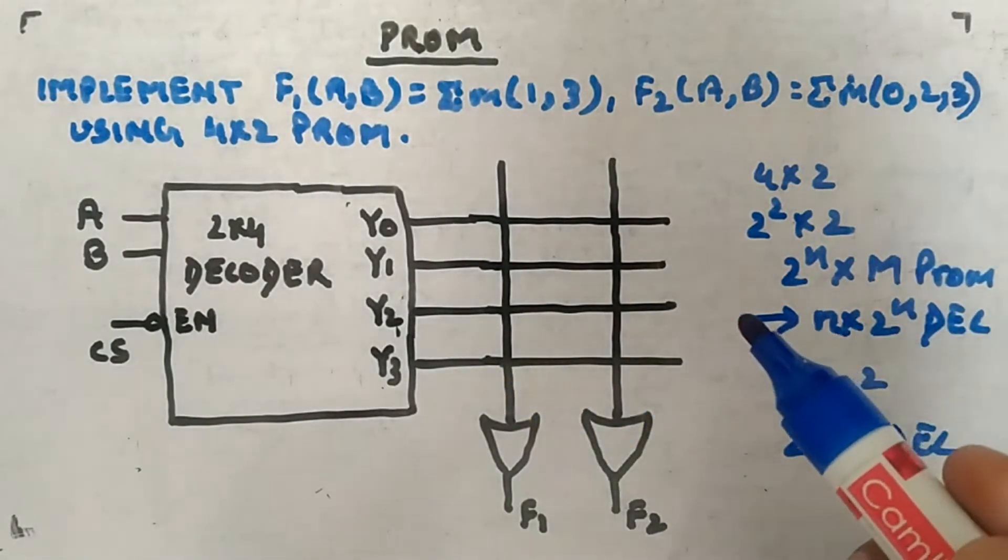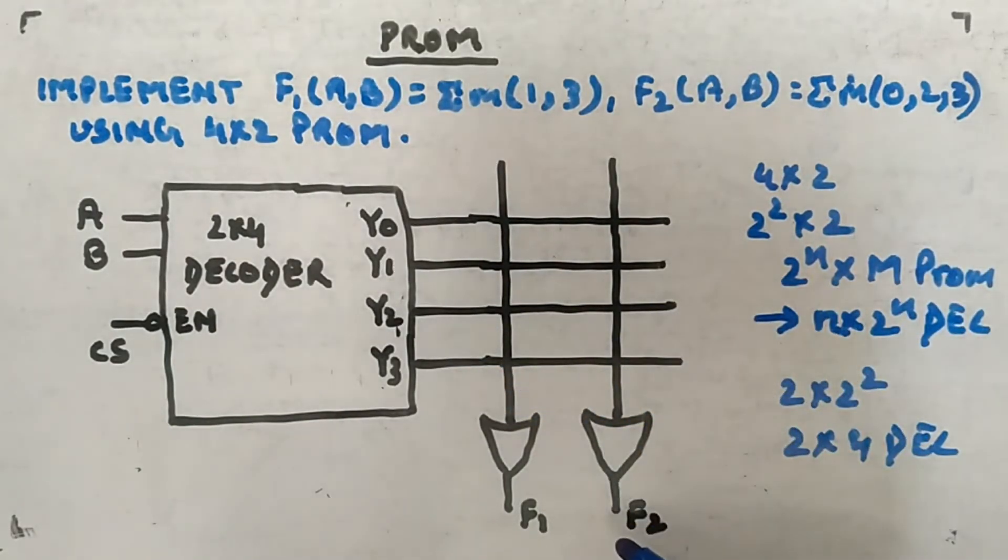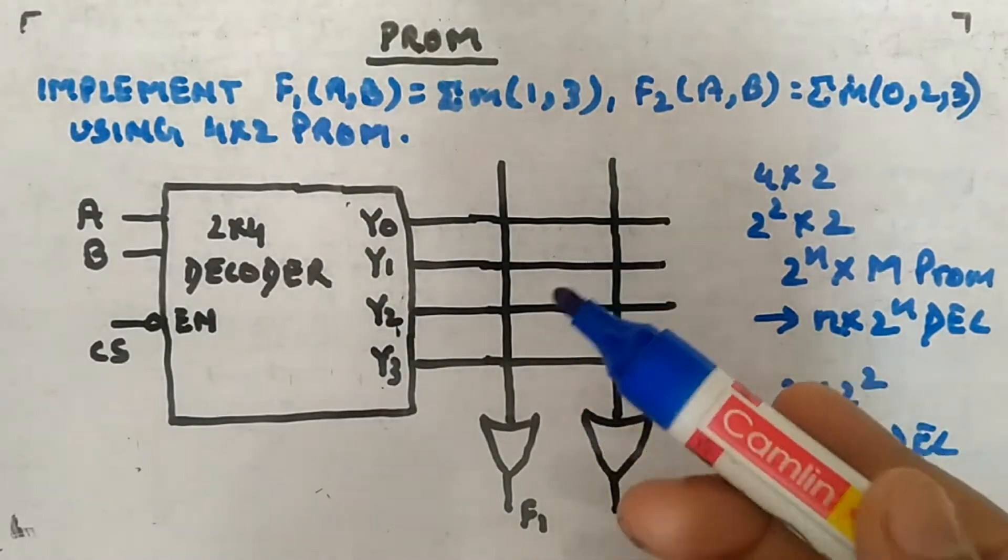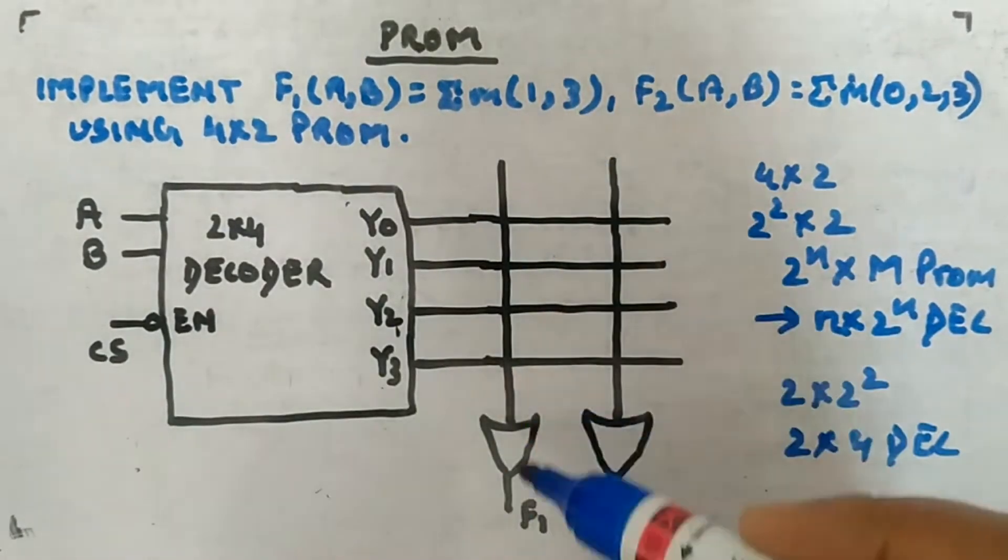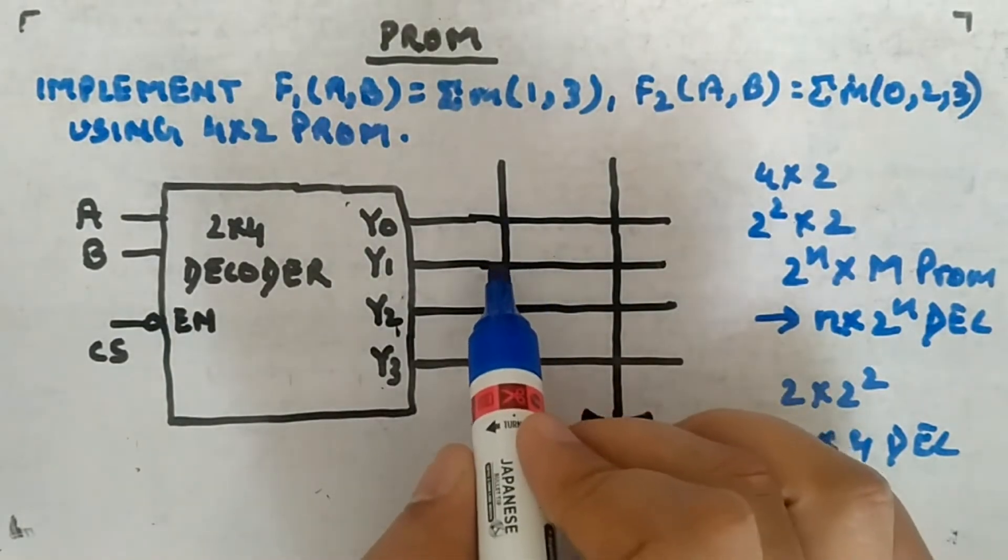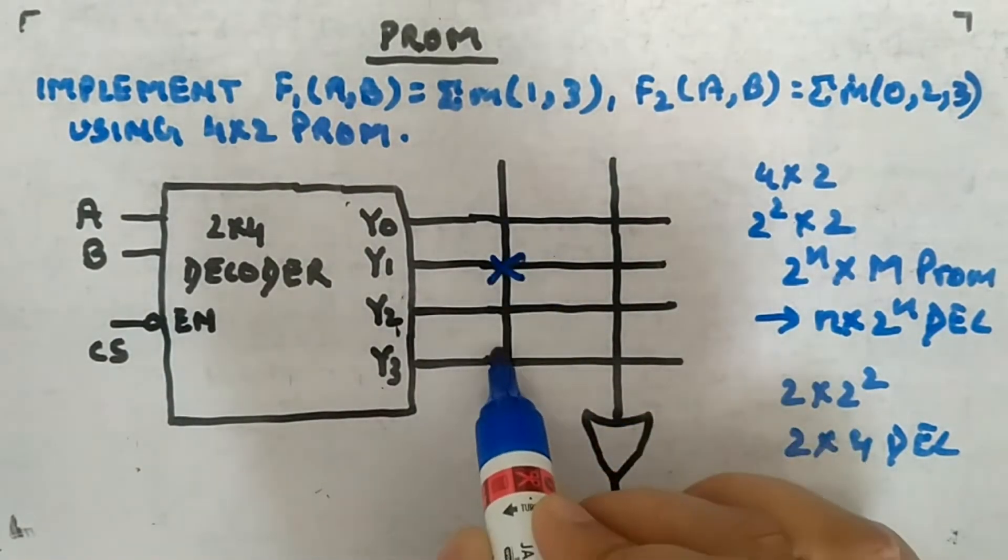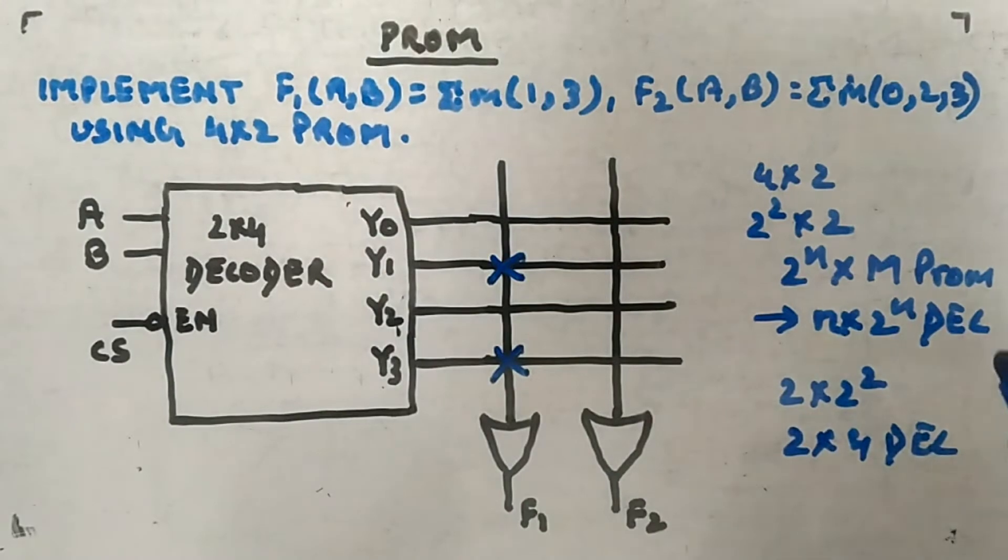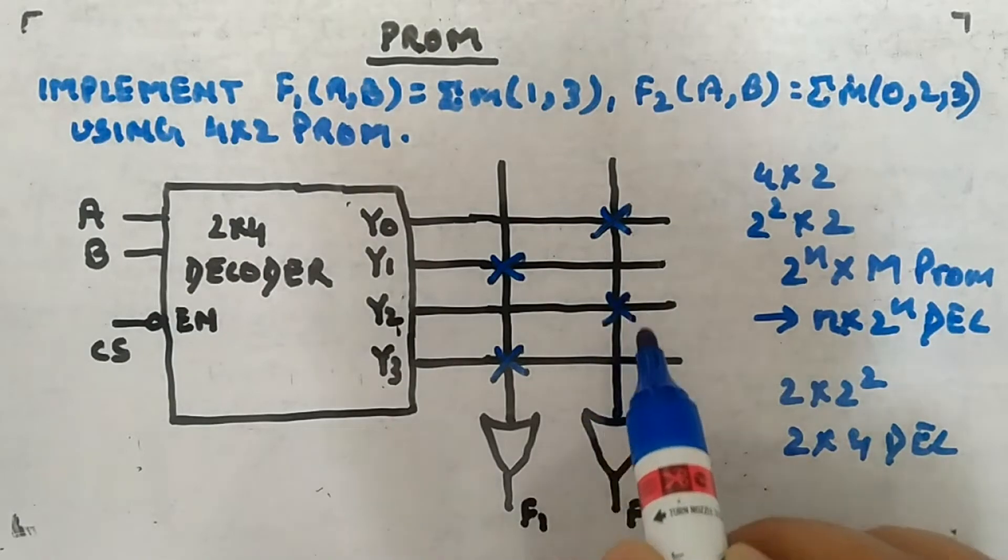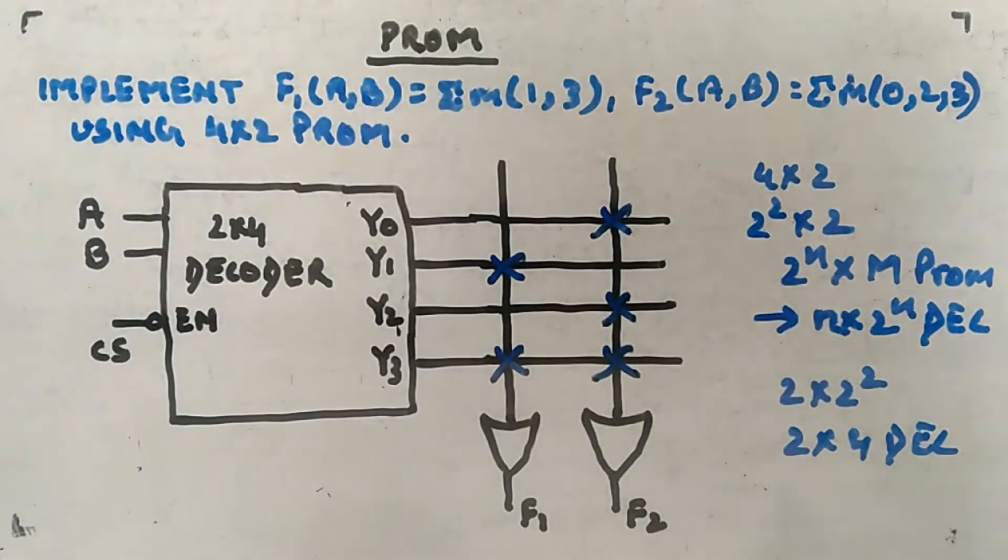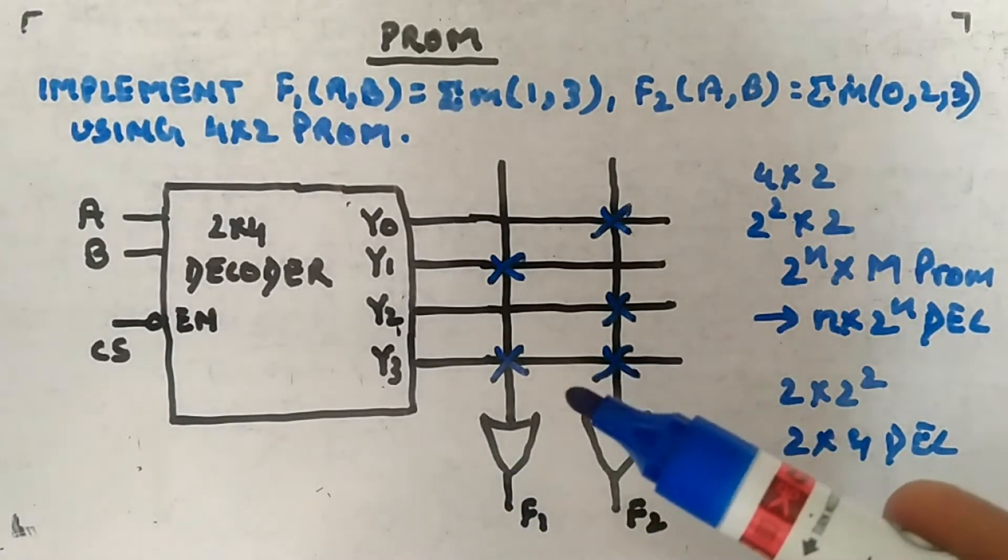You can see the functions are coming out F1 and F2. You just have to mark the minterms that is 1 and 3 for F1, so 0, 1, 2, 3. Similarly, for this you need 0, 2, and 3.